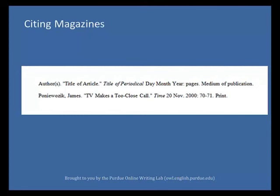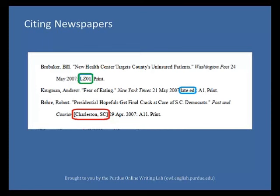Cite magazines by listing the author's name, last name first, followed by a period. Then include the title of the article in quotation marks, followed by a period. Italicize the title of the periodical, followed by the day, abbreviated month, and year of publication. After the date, place a colon and include the page numbers of the story, followed by a period. Finally, indicate the medium of publication. The citation for newspapers is nearly identical to the citation for magazines. The only difference is the pagination. If there is more than one edition available for that date, identify the edition following the date. If the newspaper is a less well-known or local publication, include the city name and state in brackets after the title of the newspaper.